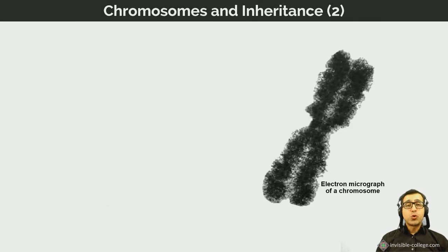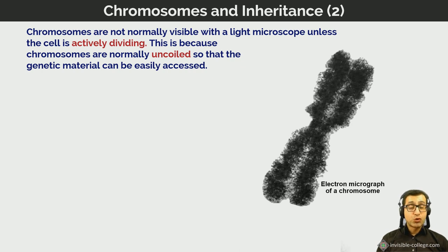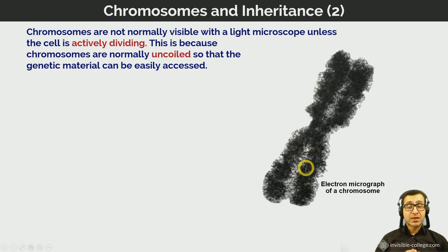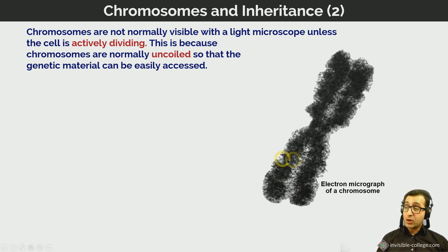Chromosomes are not normally visible with a light microscope — you need an electron microscope to view them in detail. For most of the cell cycle, chromosomes are not visible at all; they appear and become visible shortly before and during cell division, because their real function is to organize the DNA so it can be properly distributed to daughter nuclei and cells. Once cell division is over, the DNA uncoils and chromosomes are no longer visible.